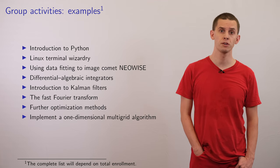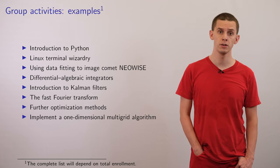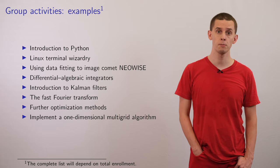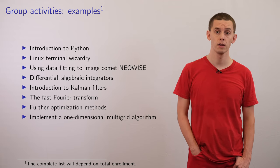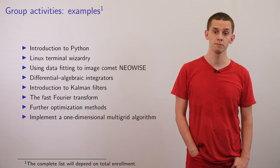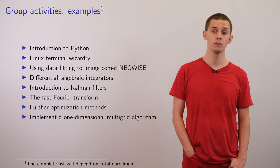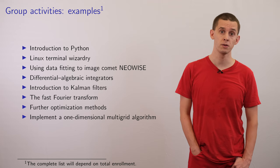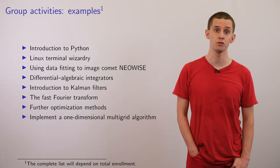At this time, we're still finalizing the list of group activities that we plan to offer but some examples include an introduction to Python, Linux terminal wizardry, using data fitting to image the comet Neowise that was present in the skies during July,